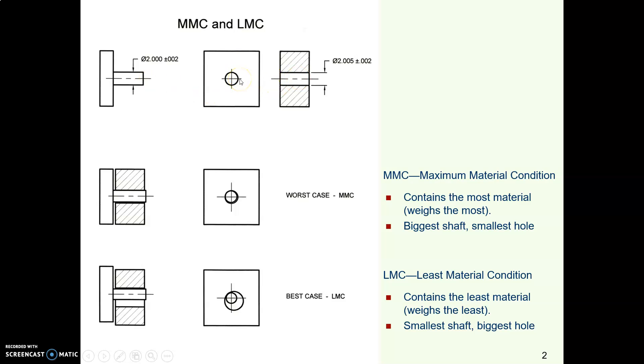For a hole, the maximum material condition is the smallest hole. Think about that. When you put this block with a hole on a scale, it's going to be the heaviest when the hole is the smallest. So biggest shaft, smallest hole. The part weighs the most when you put it on a scale.